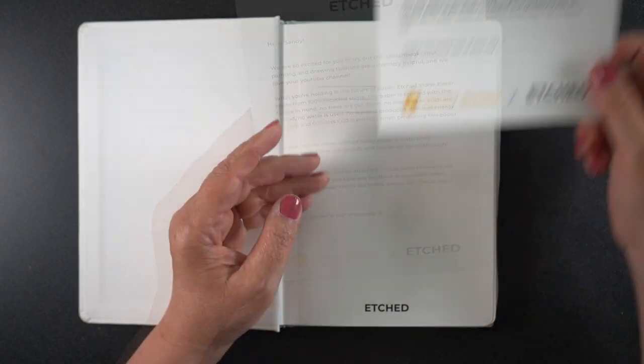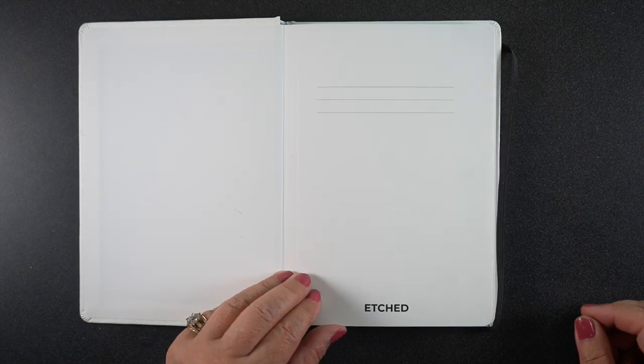They have not paid me to do this and haven't required that I do a positive video or anything, but the sketchbook came personalized both with the name on the outside and the letter on the inside which was very nice. The paper on first touch was very soft. It reminds me a little bit of Yupo but not really, Yupo is a little slipperier than this but it's definitely slippery paper.